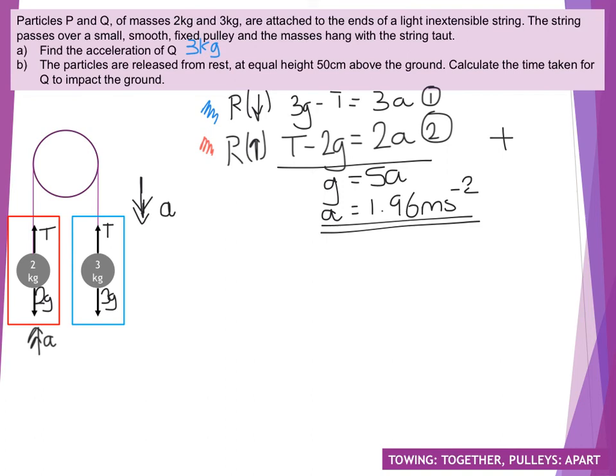That's part A answered. Part B, the particles are released from rest at equal height 50 centimetres above the ground. Calculate the time taken for Q to impact the ground. As soon as we're looking at time taken, we immediately want to be thinking about SUVAT. So we'll start looking at our information. S-U-V-A-T. Particles are released from rest. So we know that our initial velocity is zero. If I'm going to take downwards as my positive direction, which will probably make sense as the particle's moving downwards, then my displacement is going to be 50 centimetres down. Remembering that we use metres, it's going to be 0.5 as the value I use, because it's in centimetres.